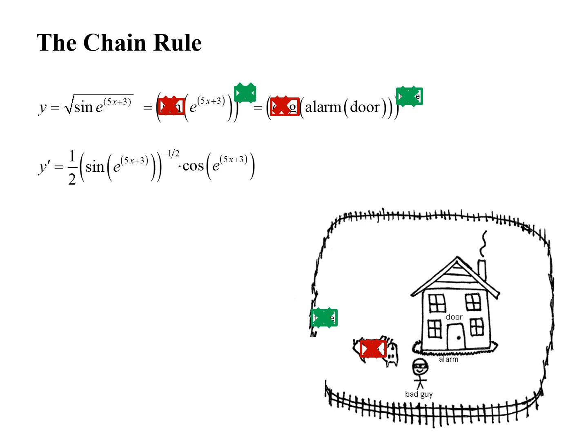Now the bad guy has to take care of the alarm. The alarm is the e, so we have to take the derivative of e to something. The derivative of e to something is e to something — e to the x is the superman of all functions; you can hit it with a derivative and it's the same thing. It's not like a polynomial that starts dying off. Our something is 5x plus 3, so we go ahead and multiply: this is e to the 5x plus 3. We have just taken care of the alarm.